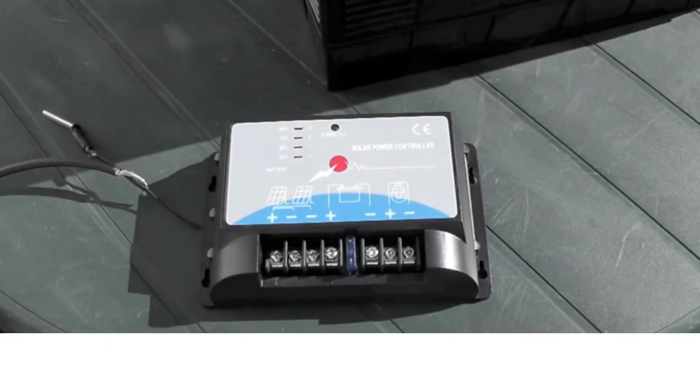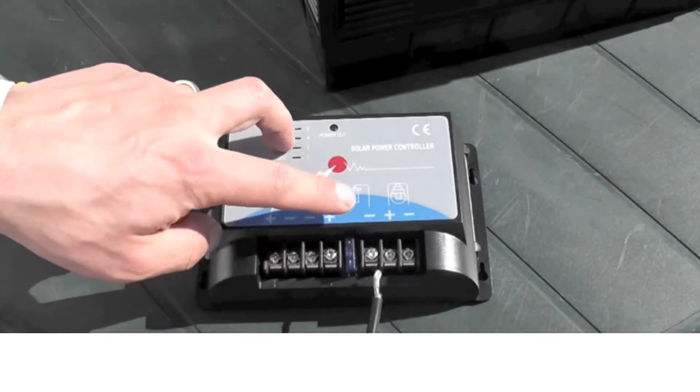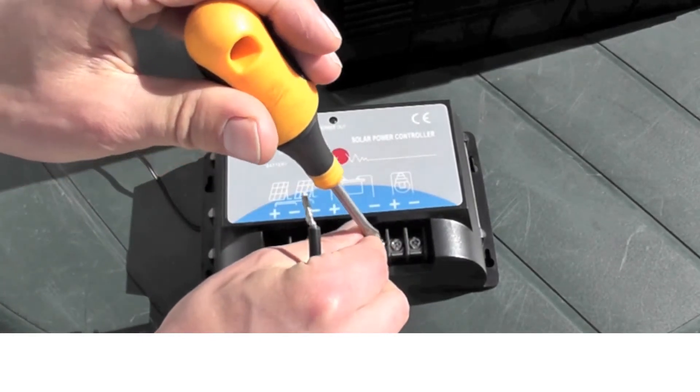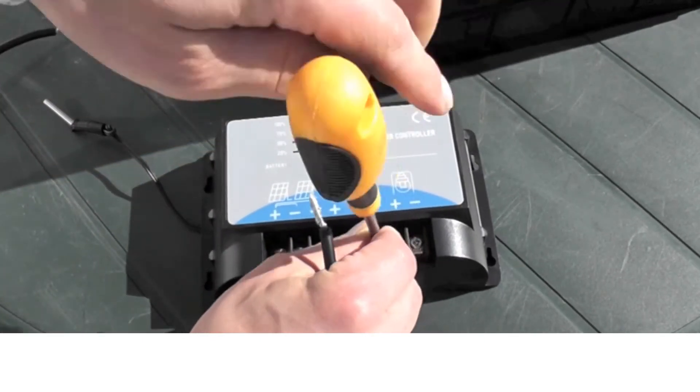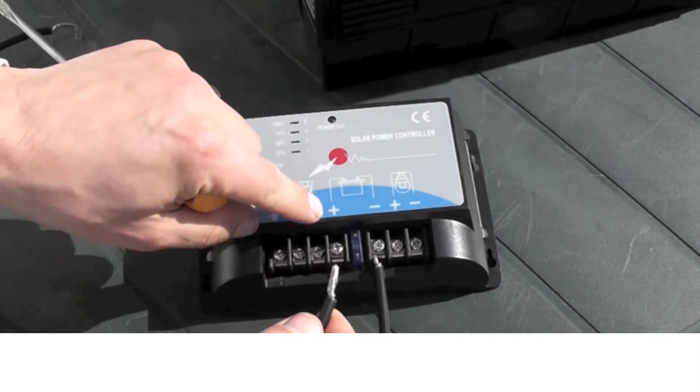First I'll wire the cable from the battery into the charge controller. So I'll wire this one in as the negative cable, so the negative on the battery symbol here. Then I'll wire the positive cable here into the positive here.